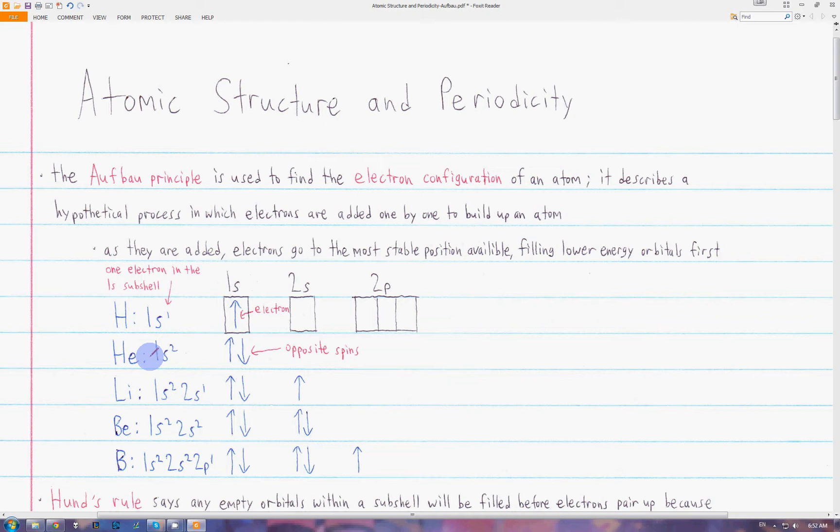Next we have helium with two electrons. The second electron will also go into the 1s orbital, since the 1s subshell is lower in energy than the 2s. Due to the Pauli exclusion principle, we know that if two electrons are in the same orbital, they have to have opposite spins. So we draw the second electron pointing down.